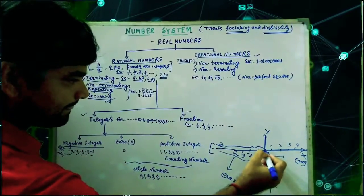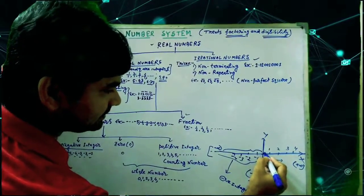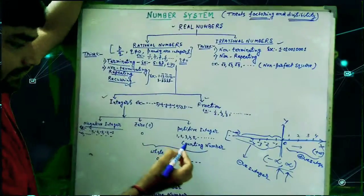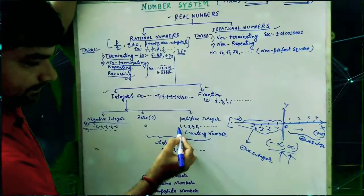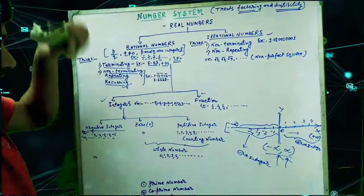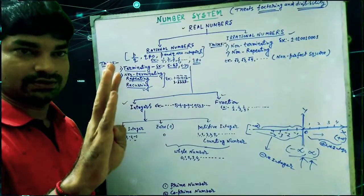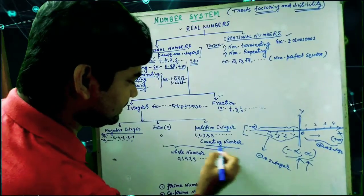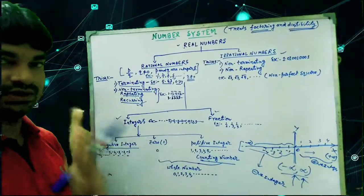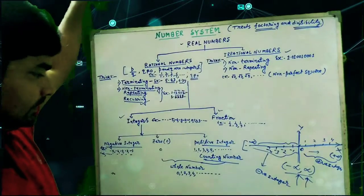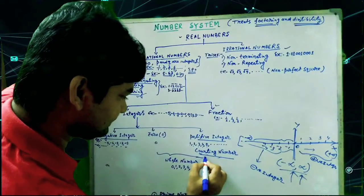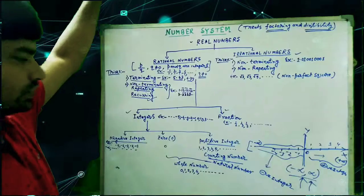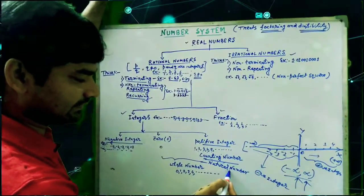Zero is at the center. From the right side of zero, those numbers are called positive integers. The positive integers start from 1, 2, 3, 4, 5, etc. These are also called counting numbers — the numbers we count starting from 1, 2, 3, 4, etc. They are also called natural numbers. So positive integers, counting numbers, and natural numbers are the same.